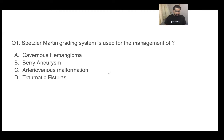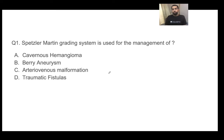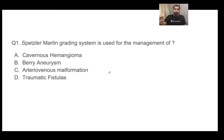Let's start by discussing today's session. I have a set of five MCQs for your NIMANS exam. The first MCQ: the Spitzer-Martin grading system is used for the management of which condition? The options are: cavernous hemangioma, berry aneurysm, arteriovenous malformation, and traumatic fistulas.